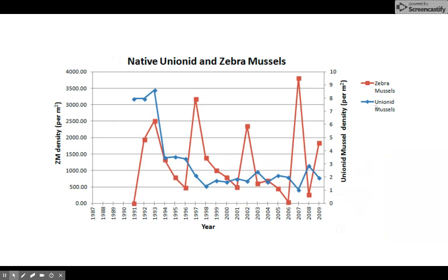These are zebra mussels and these are the native mussels. The zebra mussels got into the Great Lakes, and as the zebra mussel population went up, the native mussels went down. The zebra population collapsed but then peaked again — if you look at the general trend it's fairly stable. But if you look at the unionid mussels, the native mussels, they have crashed in population, though it seems like it may be slightly stable now.